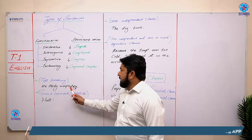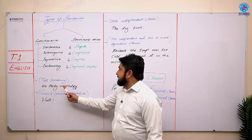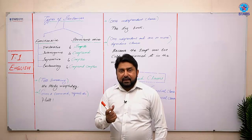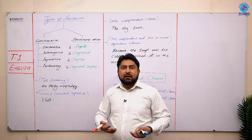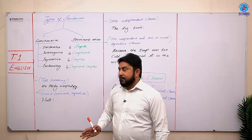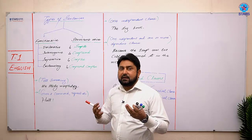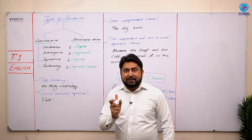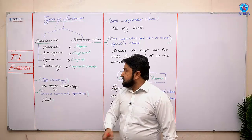Iska matlab ye hua ki ek simple sentence hai aur us sentence ke andar hume ek information milti hai — what we study. We study morphology. Aur sentence ke last mein dot bhi place kiya gaya hai. Isse pata chala ke ye declarative sentence hai — isme kuch declare kiya ja raha hai. Something is declared, stated, or described in this type of sentence.